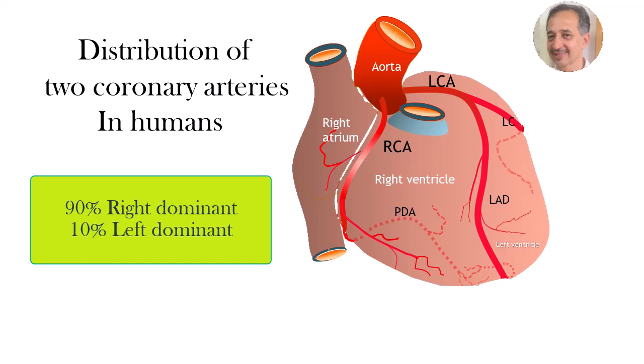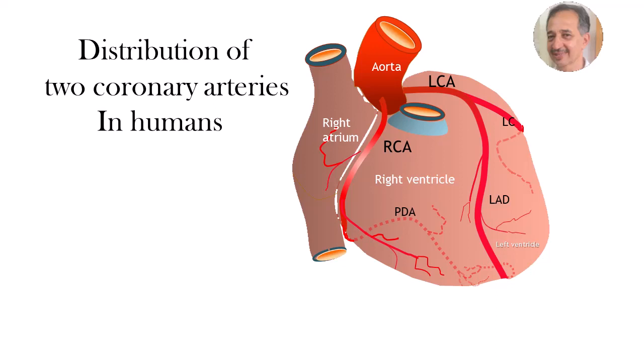In 10% of individuals, the left coronary artery is dominant — being a large vessel, with its circumflex branch supplying the major portions of the inferior surface of the left ventricle instead of the right coronary artery. The posterior descending branch in this case also arises from the dominant left coronary artery. In this case, the right coronary artery supplies only the right atrium and the right ventricle.